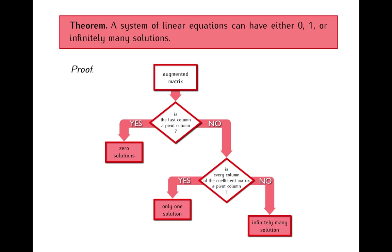Later on, we will be returning several times to this theorem and will look from different perspectives at what it means to have no solutions, only one solution, or infinitely many solutions. This will lead us to several notions such as span, linear independence, dimension of a vector space, and rank of a matrix. These notions will help us describe and analyze these various situations, so this is something that will be coming later on.